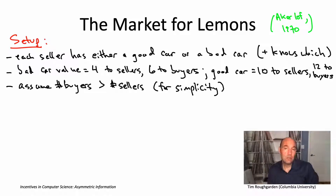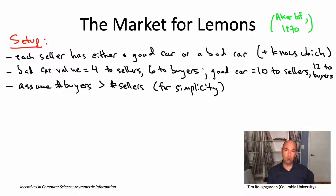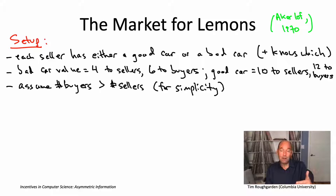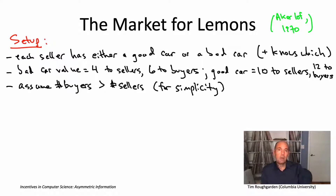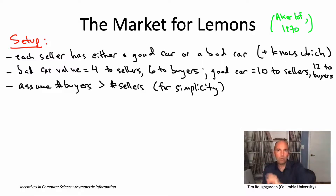The easy situation is symmetric information, meaning buyers know just as much as the sellers — a buyer can tell by looking at a car whether it's good or bad. With decentralized negotiation, you'd expect all the good cars to go for a price between ten and twelve. Under our assumption that there are more buyers than sellers, competition would push the price up, so good cars would sell around twelve and bad cars around six.